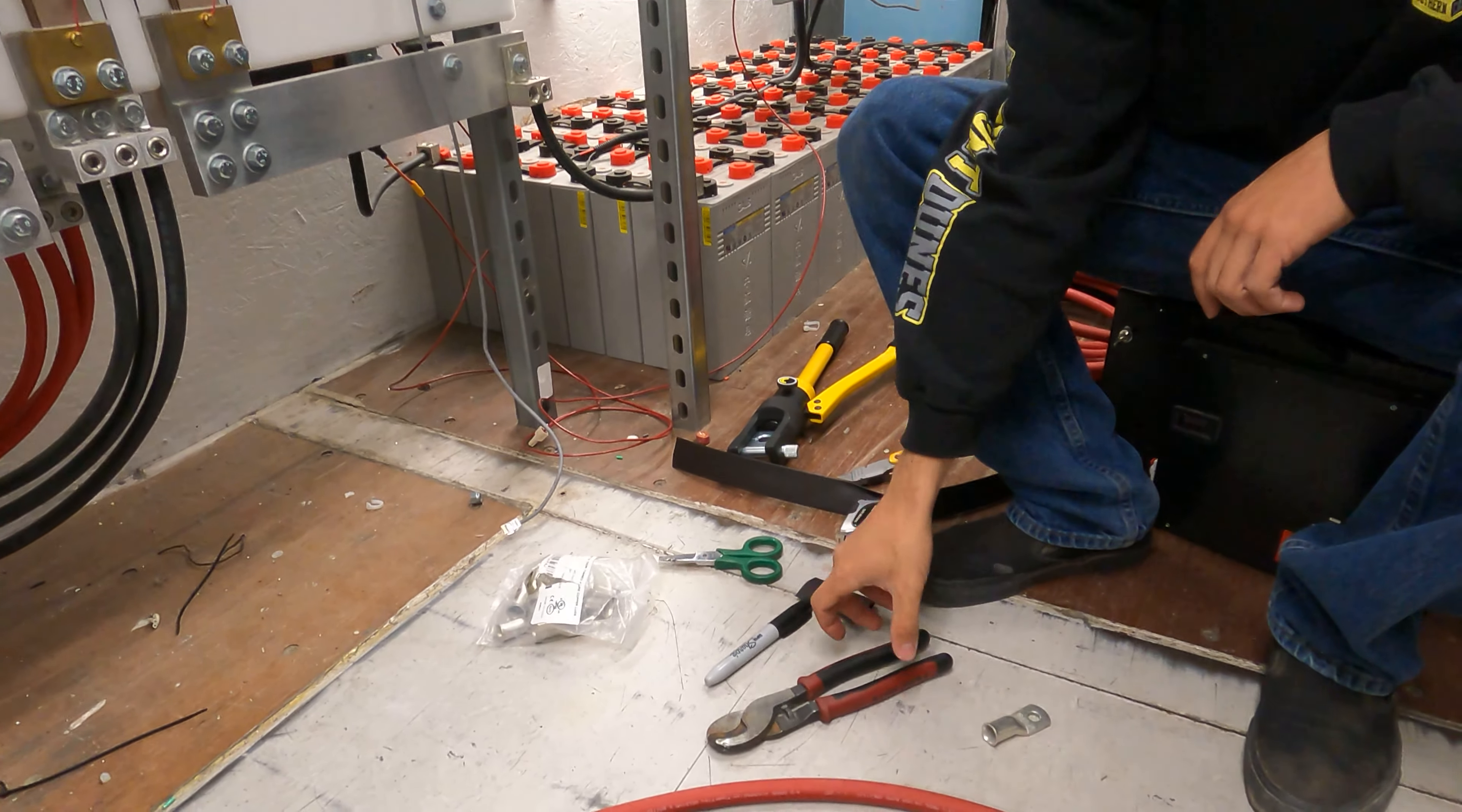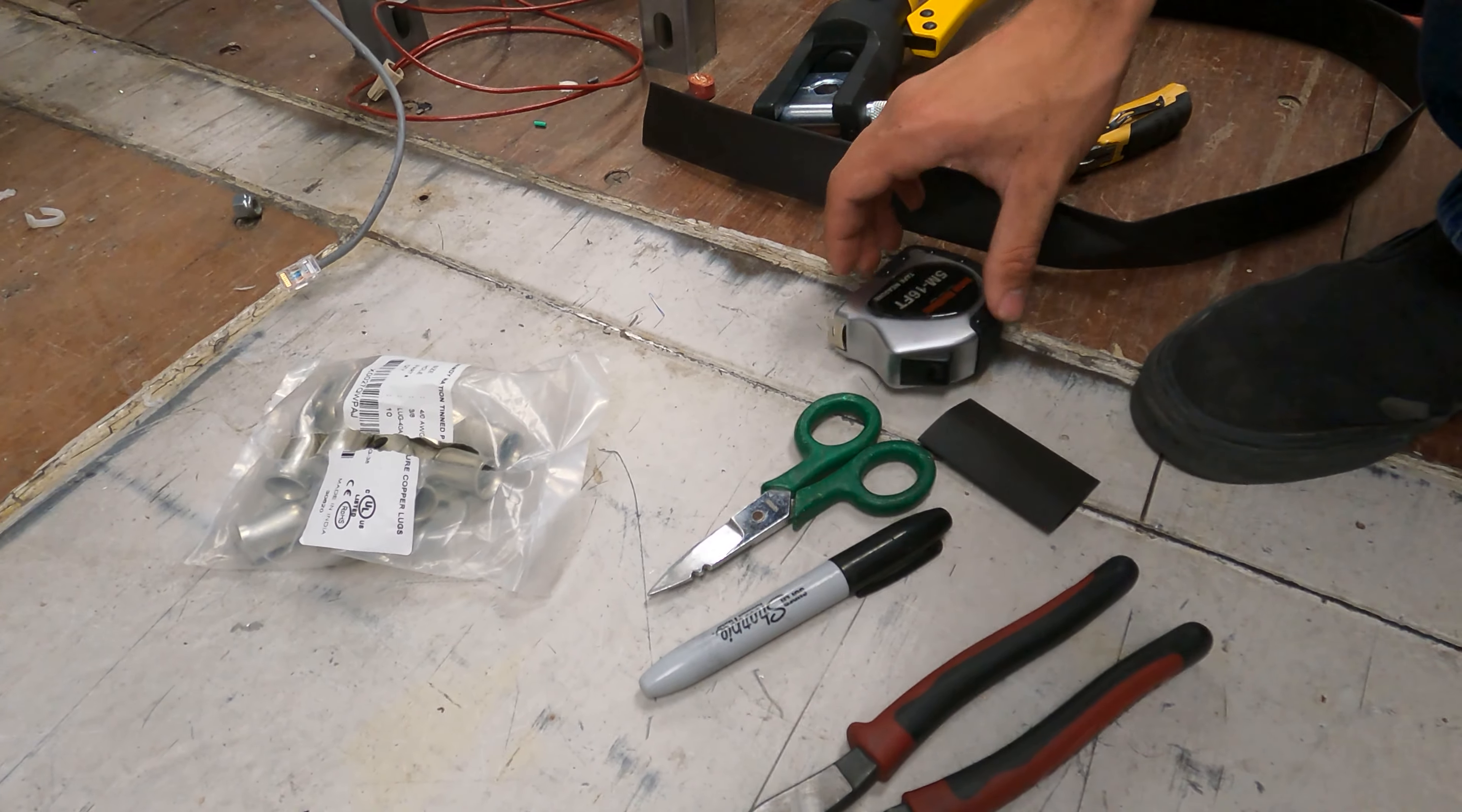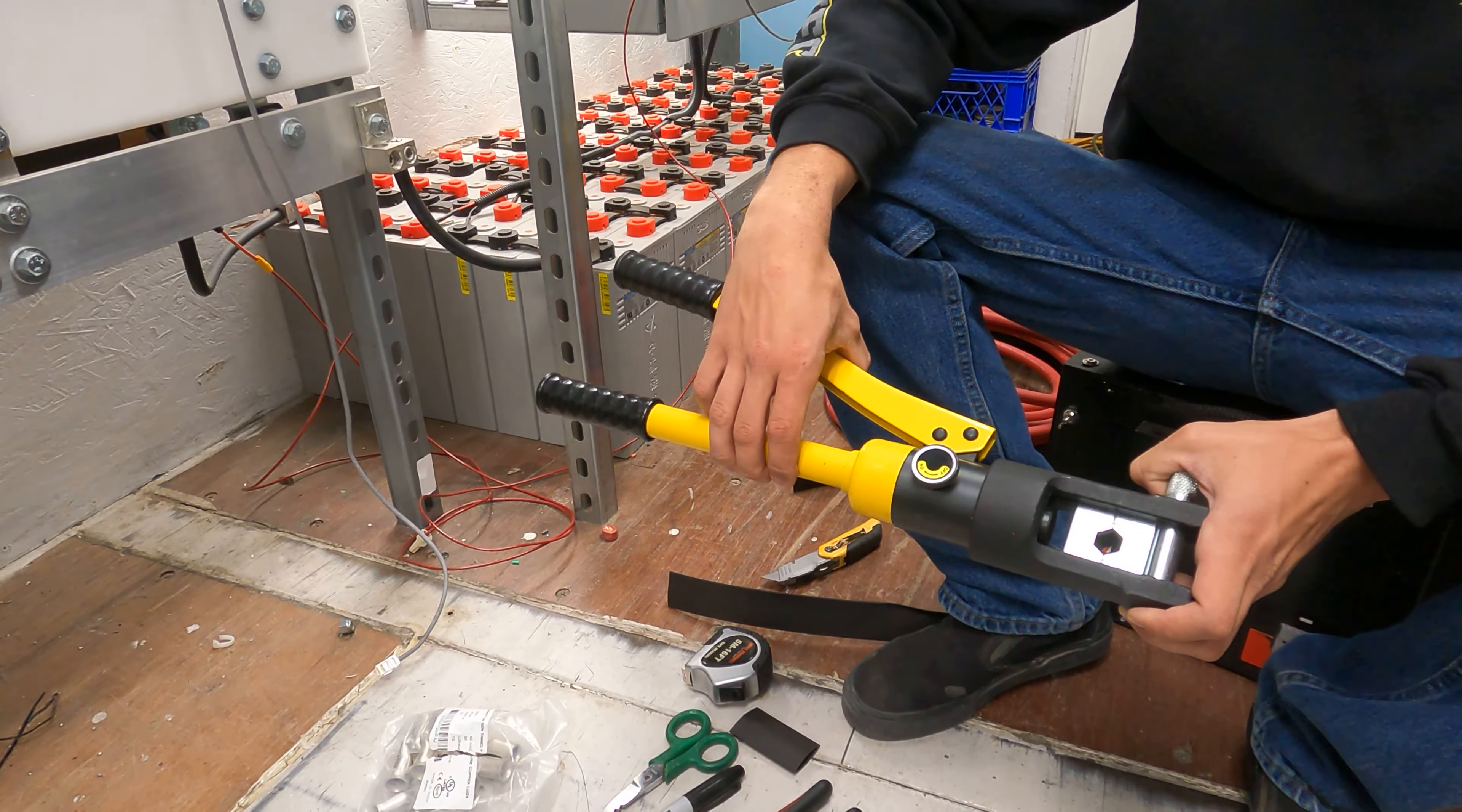First thing, tools you'll need. I have some cutters - this is what I use to cut the battery cable, just a set of Klein cutters. You'll need a sharpie, some scissors if you're putting heat shrink on. I have my lugs in here, obviously. You're going to need a tape measure. This is my bulk heat shrink. And this right here is the most important tool - a hydraulic crimping tool. I got this in a kit on Amazon, about 50 bucks if memory serves correctly. Definitely worth the money.